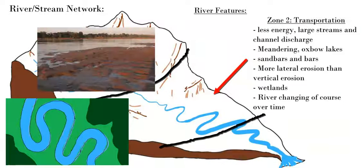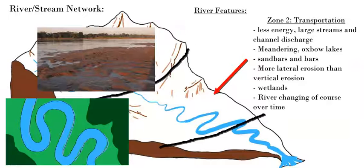In zone two — the middle course or mature course — the gradient is less steep and more flat. You get a larger channel width caused by both lateral and vertical erosion, but more lateral erosion, so the channel gets wider as water digs out a wider area, increasing discharge. Meandering also occurs — the curving of the water based on topography — with deposition of sandbars on the corners, and changes in water velocity within the channel: fast-moving water causes more erosion, slow-moving water causes more deposition.